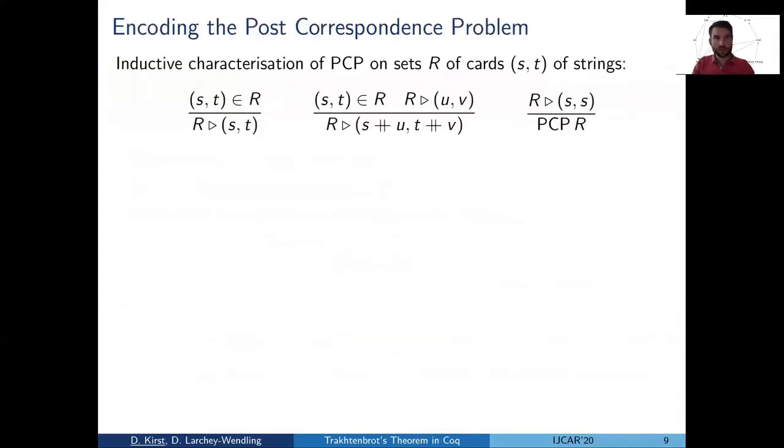So now let's look at how we encode the Post Correspondence Problem in first order logic. First, how do we define the Post Correspondence Problem at all? We use an inductive characterization where the Post Correspondence Problem starts with a set R of cards. And then it's about deriving pairs of strings from these cards.